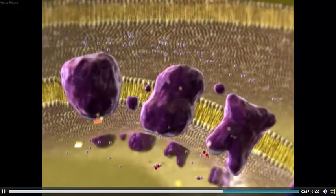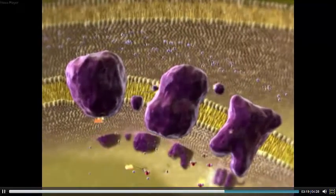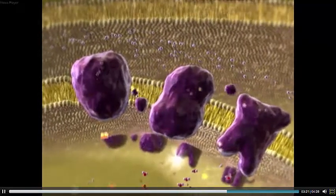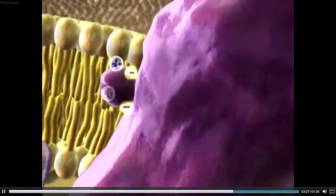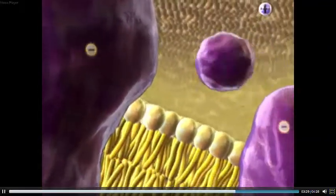Electrons are transferred from one electron carrier to the next in the electron transport chain. Let's take a closer look at the path electrons take through the chain. As electrons move along each step of the chain, they give up a bit of energy.